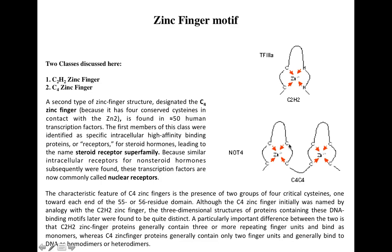C4 zinc finger proteins differ from C2H2 proteins in that this module consists of 55 or 56 residues instead of 23 to 26 residues. Rather than two cysteine and two histidine residues, there are four cysteine residues which interact with the central zinc atom, leading to the formation of this finger-like structure. That is why they are known as C4 zinc finger proteins.